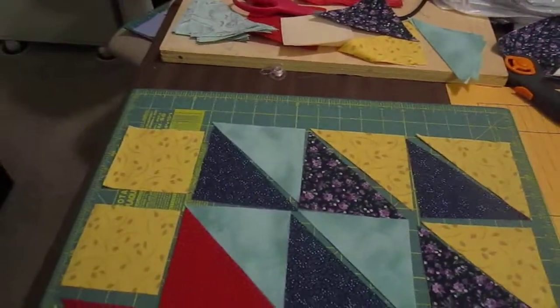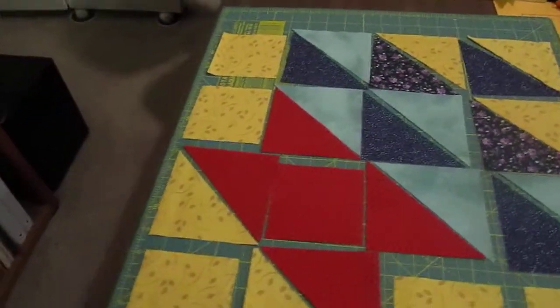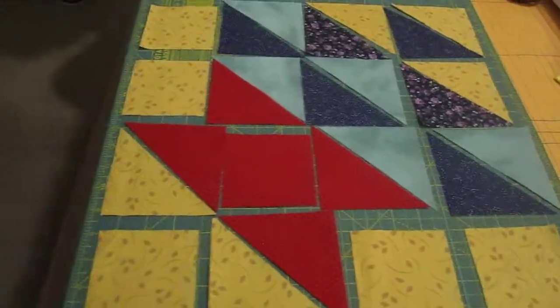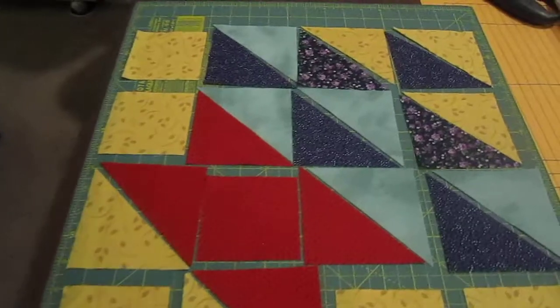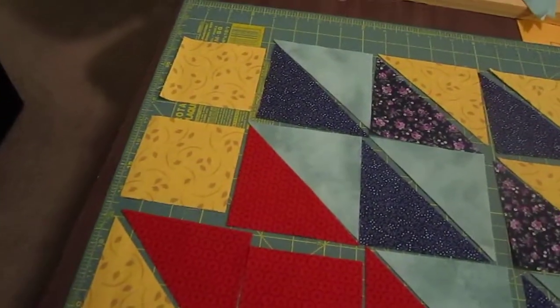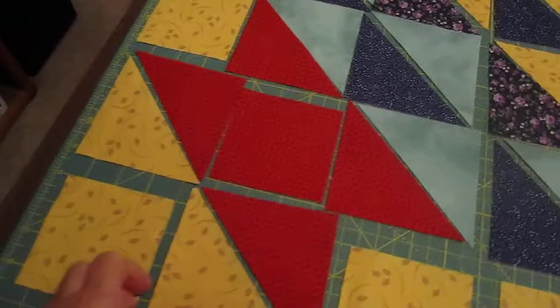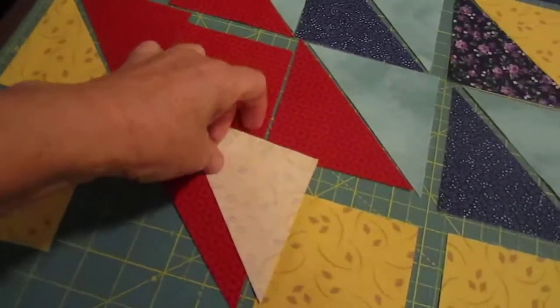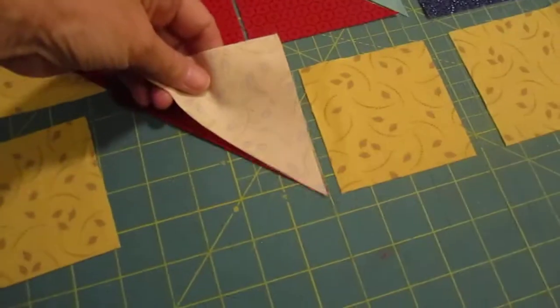Once you get all your squares put together, lay them out like this. What we're going to do is sew the triangles together. We're going to take right sides together and sew them with a quarter-inch seam.